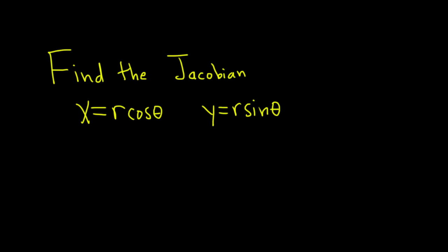Hello, in this question we're going to find the Jacobian for the change of variables given by x equals r cosine theta and y equals r sine theta.